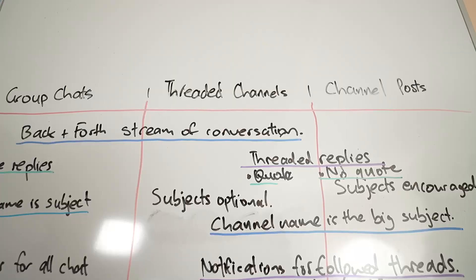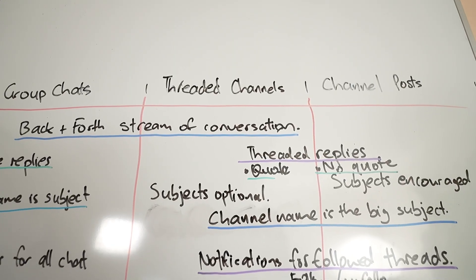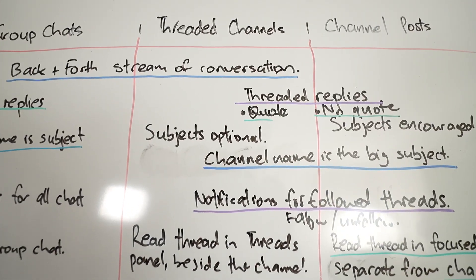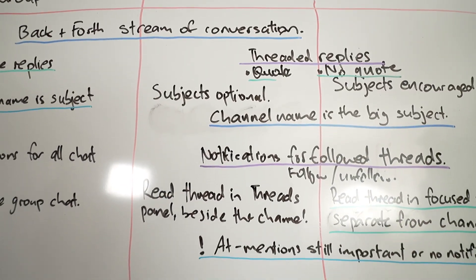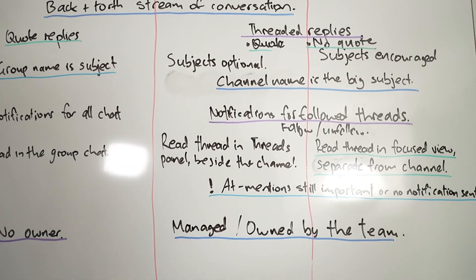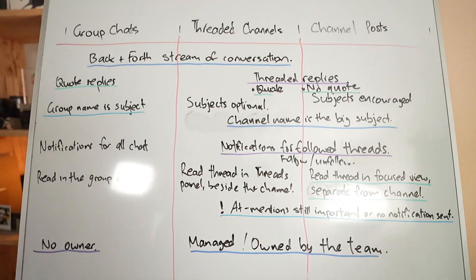What I want to do is a comparison between group chats, threaded channels, and channel posts, seeing those different conversation options.